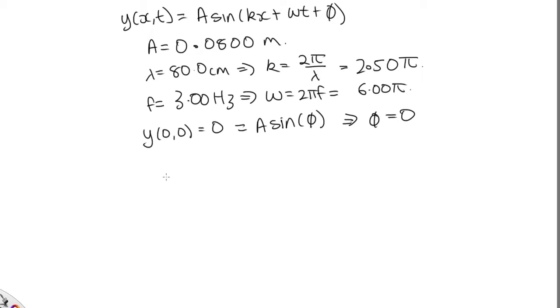OK, now let's just substitute everything in. y of x and t is equal to 0.0800 sine of 2.50 pi x plus 6.00 pi t plus 0. So that is our solution to part a.